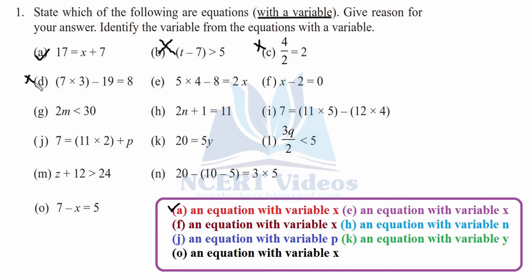For part e, you can see we have an equal sign, left hand side and right hand side, and there is a variable x, so it satisfies our criteria. Therefore we take it — an equation with variable x is the solution. For part f, we have an equal to sign with left hand side and right hand side, and there is a variable x. It is an equation with variable x.